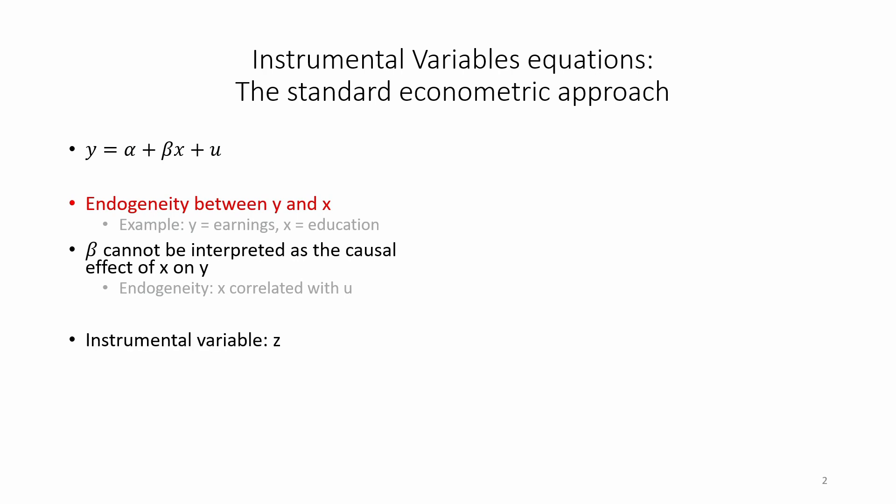Instrumental variables regression, or IV regression for short, can potentially help us to get causal estimates of the effect of x on y if we can find a suitable instrumental variable z. Z has to satisfy the exclusion restriction, which is often stated as follows. Z is correlated with x but uncorrelated with u.